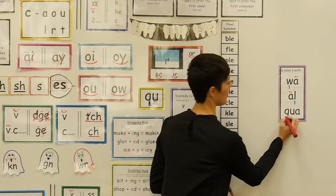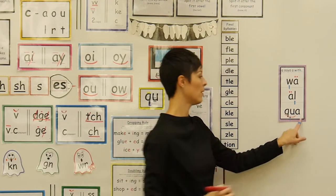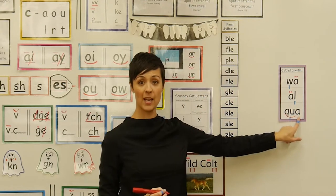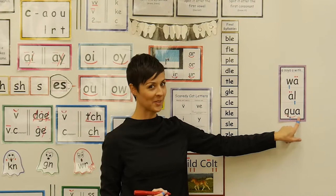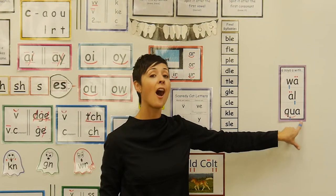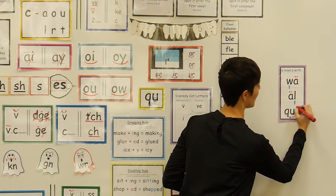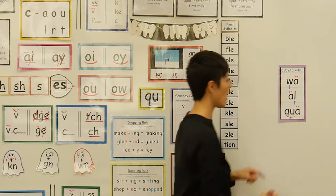The QU combination — Q, U — followed by A will also say 'ah.' We code it with an umlaut.